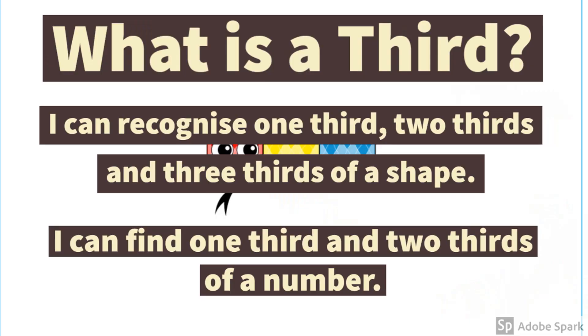Let's take a look at our learning sentences for today. By the end of this lesson you should be able to say: I can recognize one-third, two-thirds, and three-thirds of a shape. And you should also be able to find one-third and two-thirds of a number. Okay, are you ready to start? Let's go!